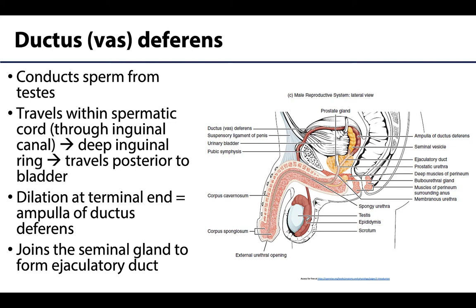The ductus or vas deferens conducts sperm from the epididymis to eventually open into the prostatic urethra. This tubular structure is so thick it is almost cord-like, and it travels within the spermatic cord through the inguinal canal and the deep inguinal ring. At that point it diverges from other spermatic cord contents and courses medially toward the base of the bladder near the prostate. In its more distal portion, around the level of the prostate and posterior bladder, the ductus deferens dilates notably and is referred to as the ampulla of the ductus deferens. Here it joins with the duct of the seminal gland to form the ejaculatory duct.